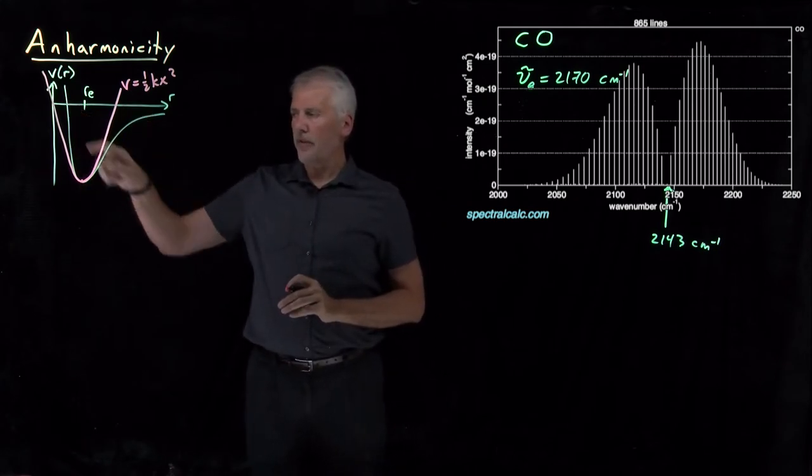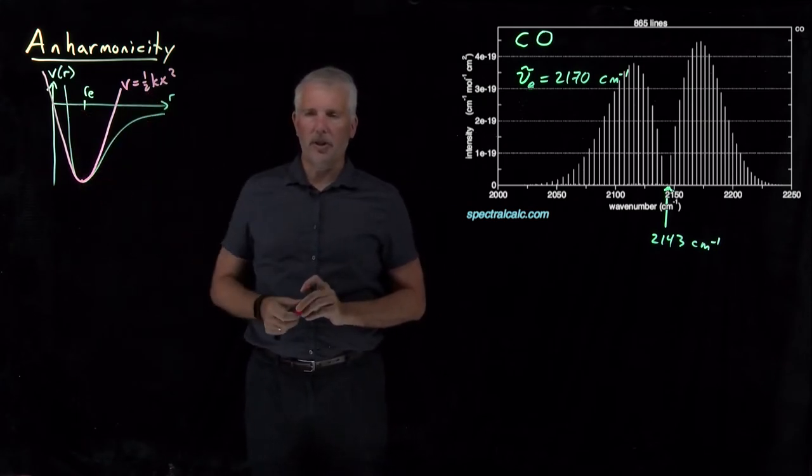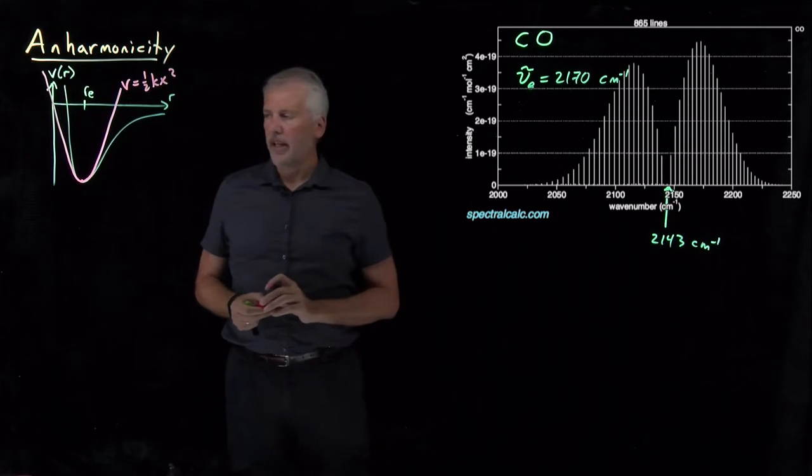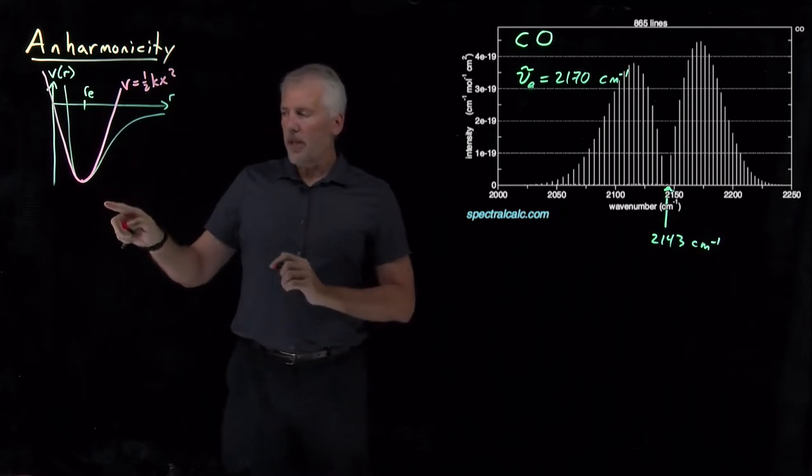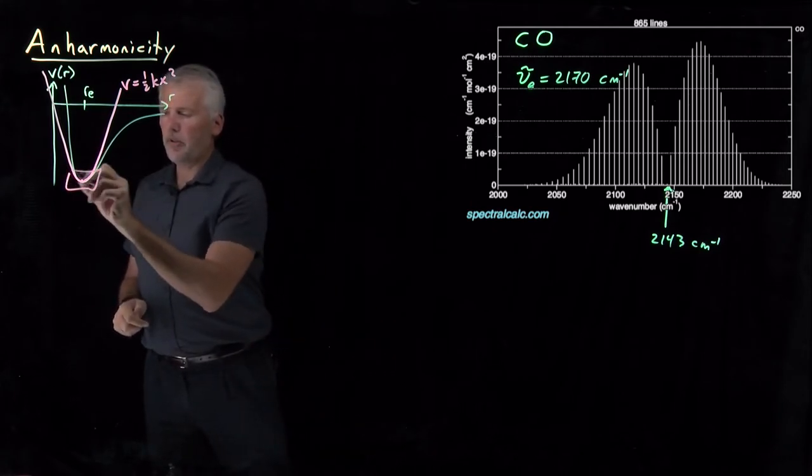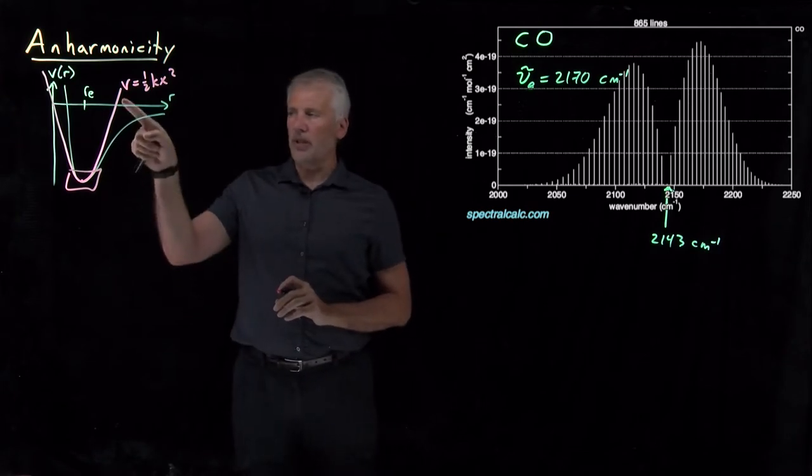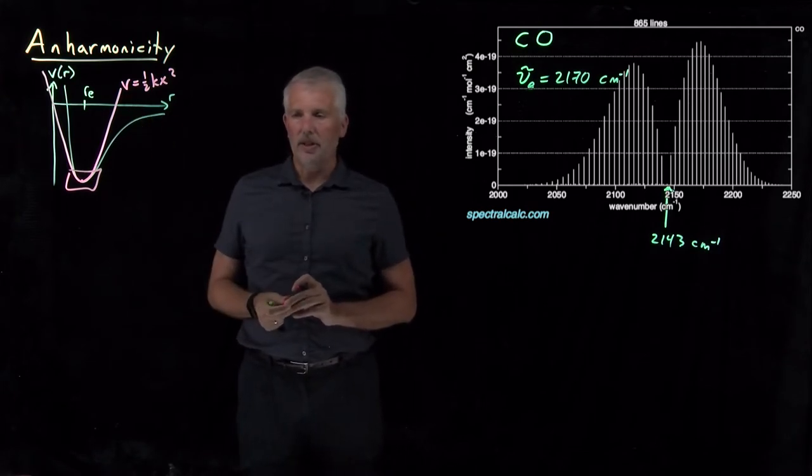That the energy instead looks like a parabola. So the pink curve that I've just drawn here is the one that we actually inserted into the Schrödinger equation, and is an approximation for the real curve that works pretty well at low energies, but it begins to work less well as the energy increases.